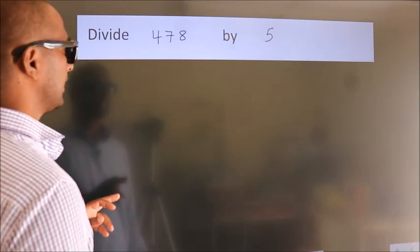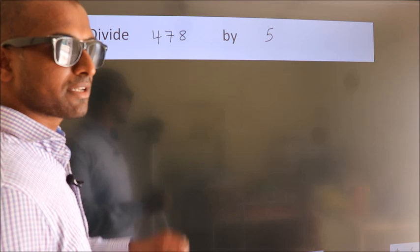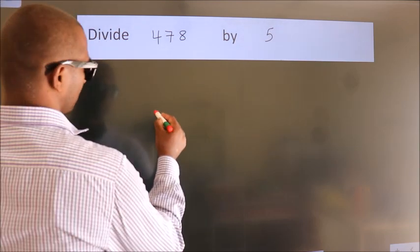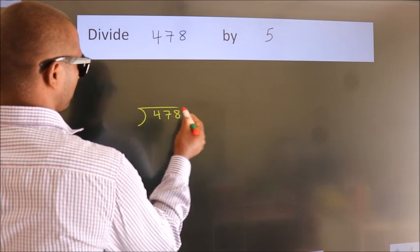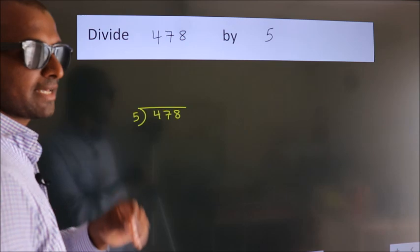Divide 478 by 5. To do this division, we should frame it in this way. 478 here, 5 here. This is your step 1.